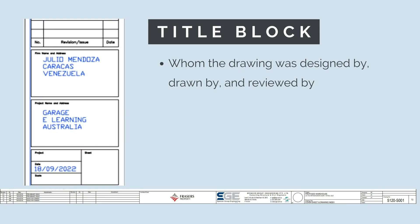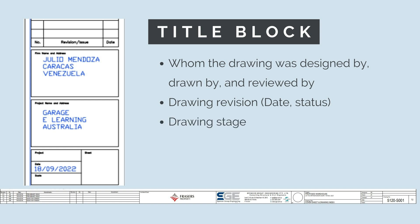The first thing to note when looking at a set of engineering drawings is the title block. The title block tells you who created the drawing, what the drawing is, the date the drawing was created, the stage of the drawing — so whether it's a 30%, 70%, or 95% design, or IFC — and also the type of drawing and the drawing reference number. All this information is found on the title block.